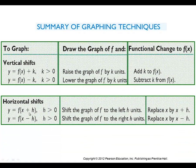If we have x plus 1 inside parentheses, the graph will shift to the left one space. If it's f(x) minus 3 parentheses cubed, when you have a minus inside, you're going to shift it to the right. The graph actually shifts in the opposite direction of the sign that's inside the parentheses.